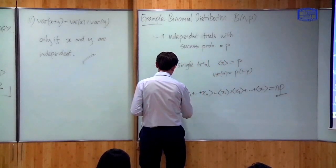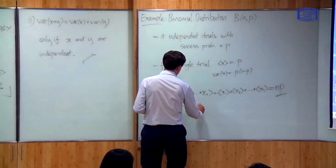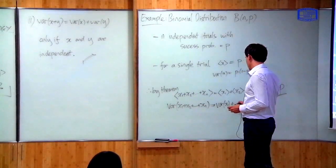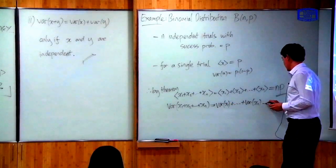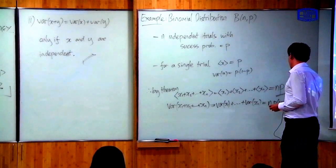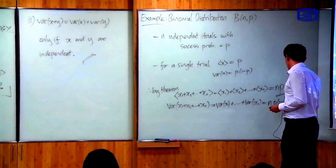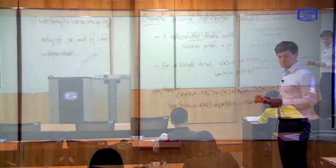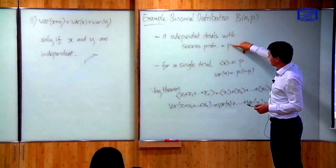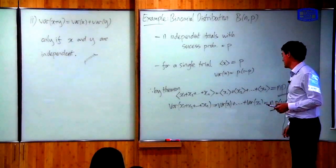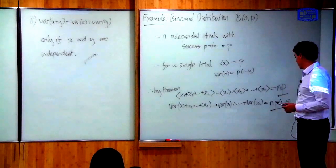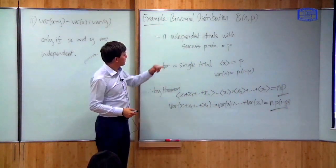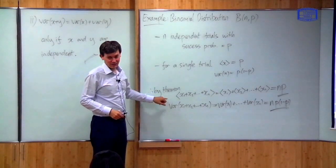It doesn't matter that they're independent for the mean — each has mean p so the total is Np. It does matter for the variance. The variance of the total number of successes equals the variance of X1 plus ... plus the variance of XN, which equals N times p times (1 minus p). So we've worked this out without calculating the exact form of the distribution, just by using the theorem about adding independent events.